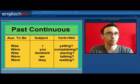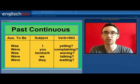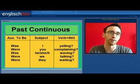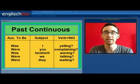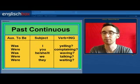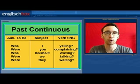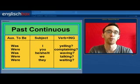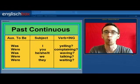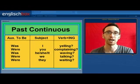How about to form a question? For a yes-no question, or a closed question, all you have to do is invert the auxiliary verb 'to be' and the subject. Was I yelling, for example, or were you complaining? For an open question, you put the question word before the auxiliary. Why were you complaining, for example?